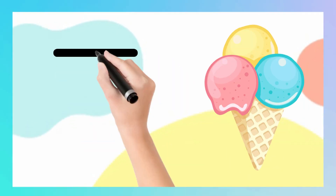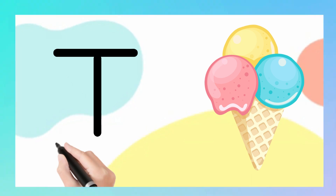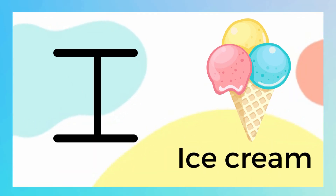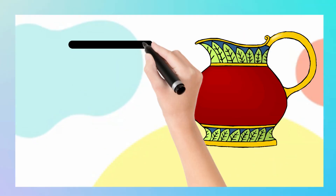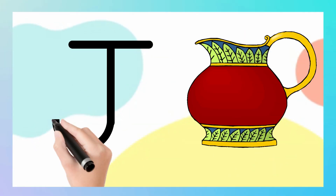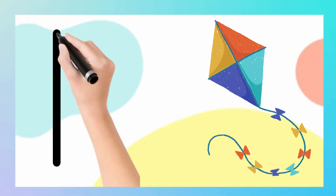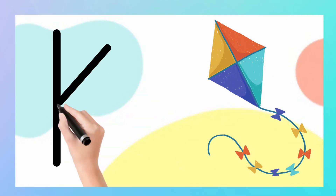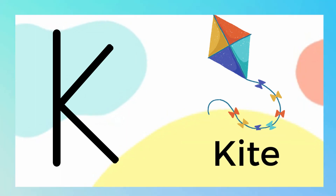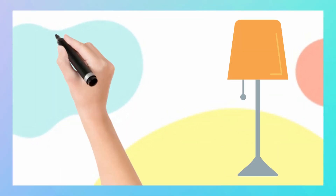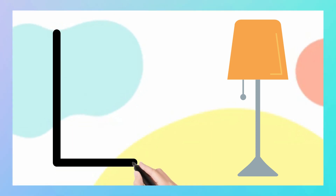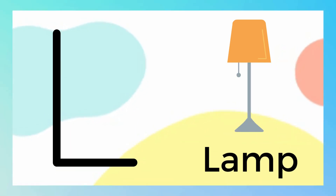I for Ice Cream. J for Jug. K for Kite. L for Lamp.